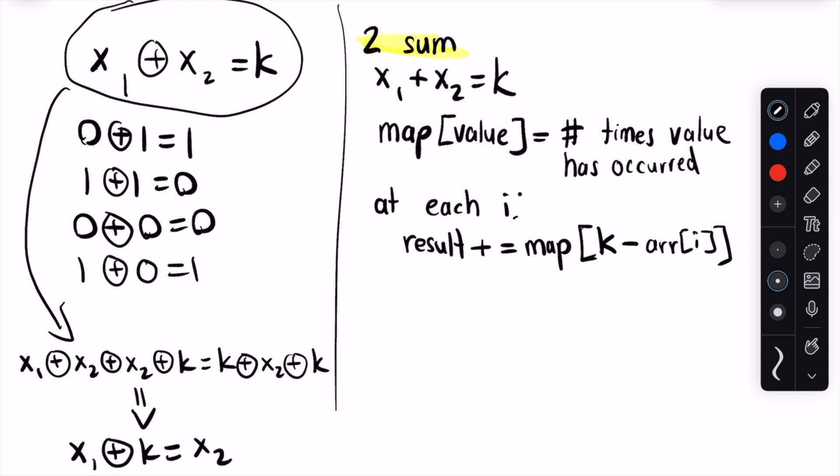So as we iterate through the array, we can store the elements we've seen so far in a map, similar to 2sum, mapping the element to the frequency of that element in the array, and then we simply check whether the xor complement of the target is present in the map. In 2sum, the complement of the target that we're looking for is target minus the current element. In this problem, the complement of the target that we're looking for is target xor the current element.